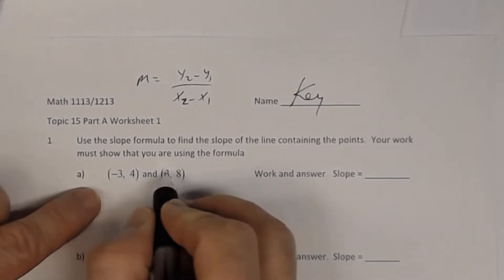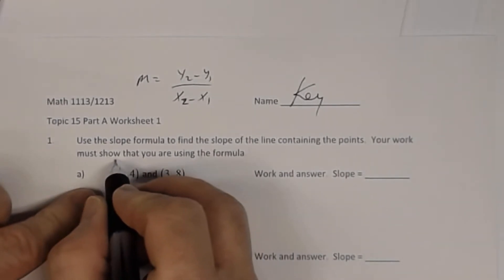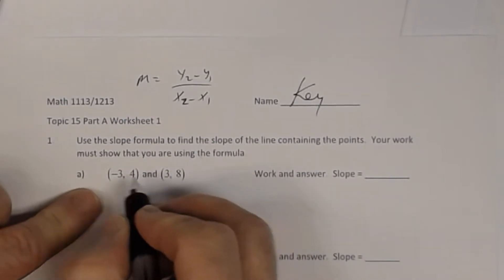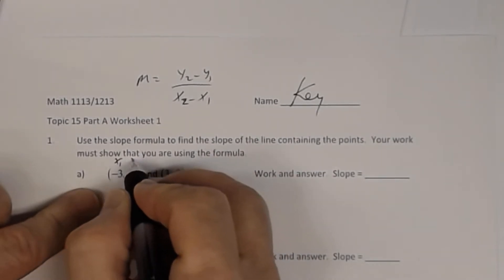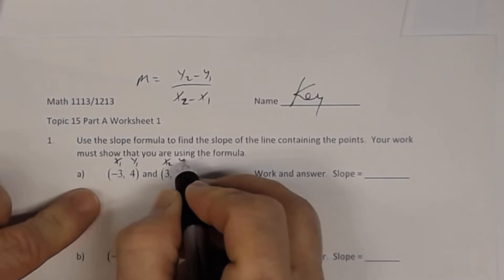Some students will go ahead and label the coordinates. So this is your first point and this is the second point. They'll call this x sub 1, y sub 1, and this will be x sub 2, y sub 2.